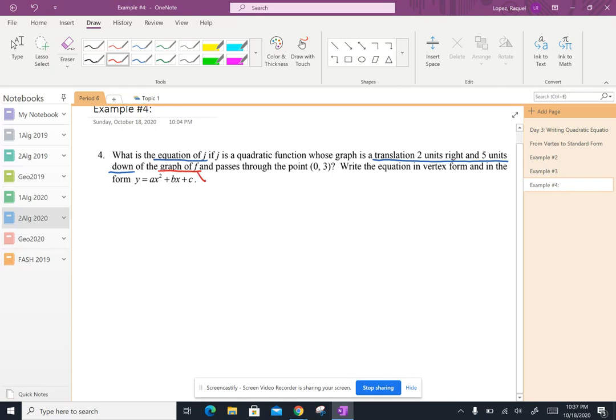And if you remember from example number three, the graph of f is the parent function with the equation f of x equals x squared. We also know that the graph of j goes through the point zero comma three, and they want us to write the equation in vertex form and in standard form.